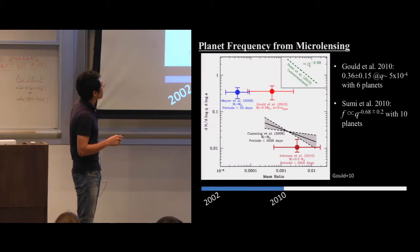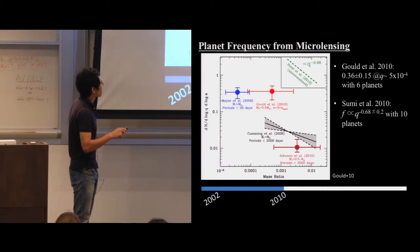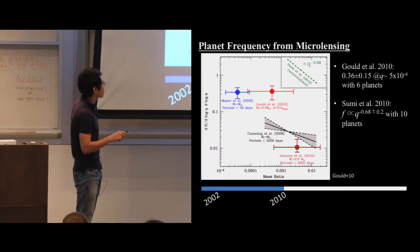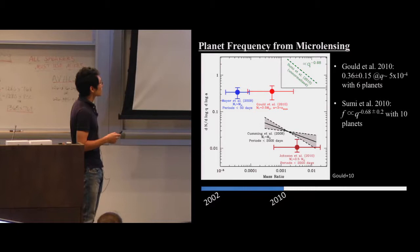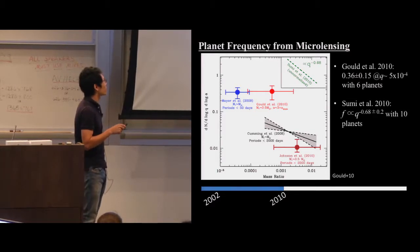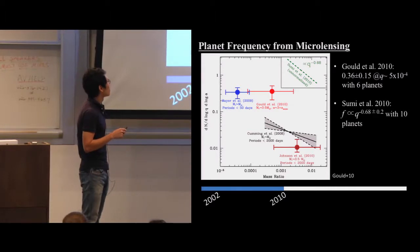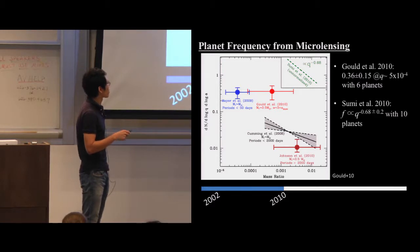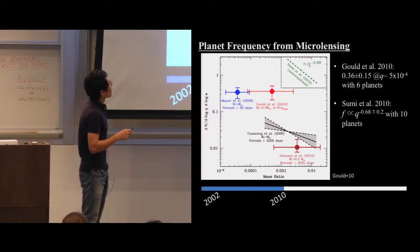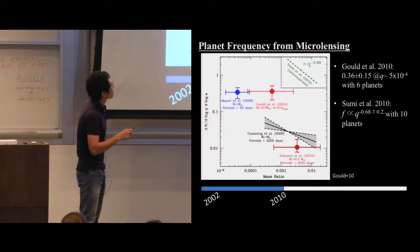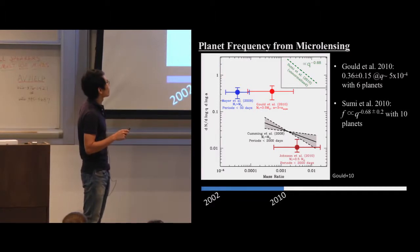This microlensing frequency is a factor of 10 higher than the RV planet frequency for hot planets. They argued this difference can be explained by extrapolating the planet frequency as a function of separation. An independent study by Sumi et al. also found planet frequency as a function of mass ratio and estimated the slope of that relationship.